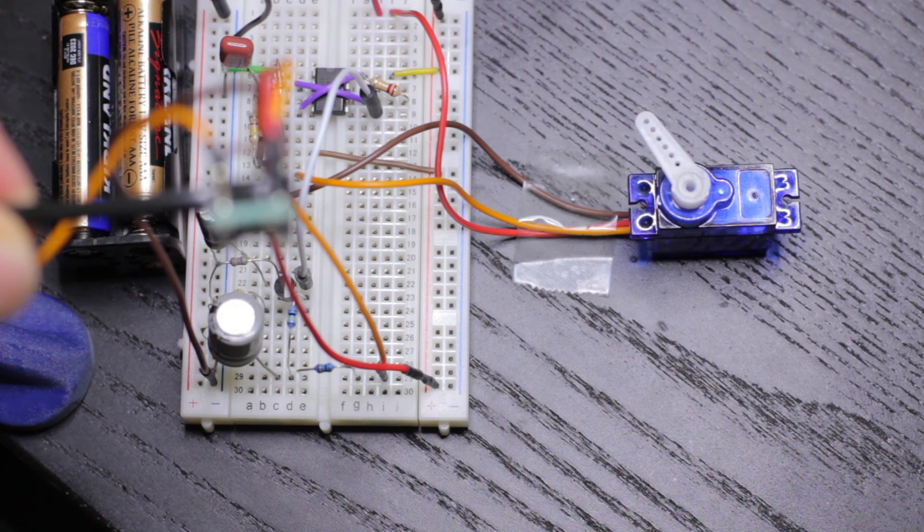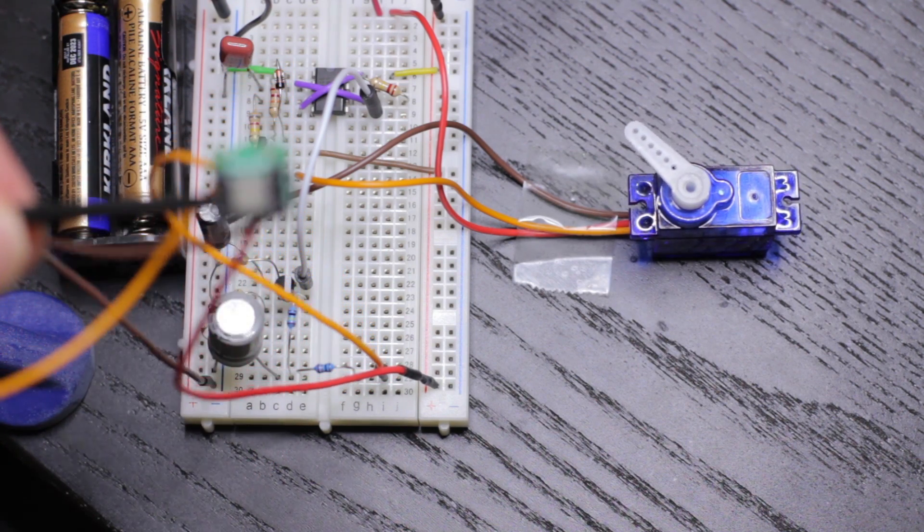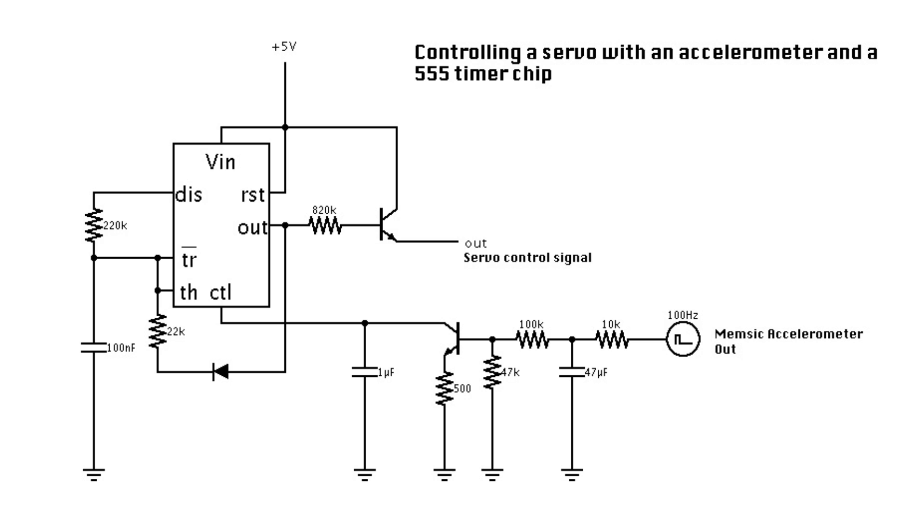Now just duplicate the circuit for the second axis of the accelerometer. Here's the complete circuit diagram. Thank you for watching!